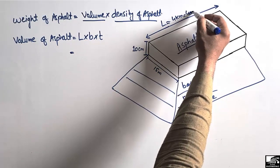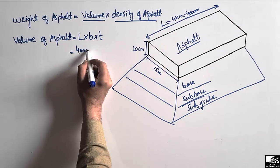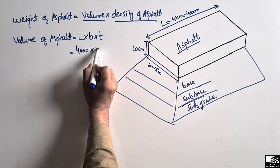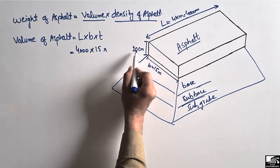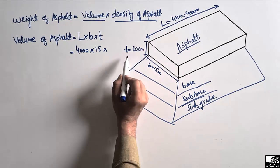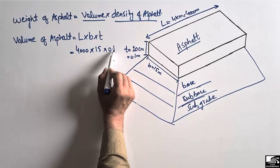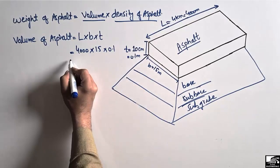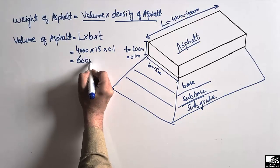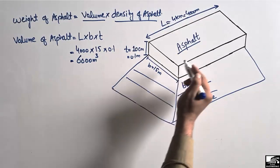So: 4000 meters (length) multiplied by 15 meters (breadth) multiplied by 10 centimeters (thickness). Converting 10 centimeters to meters gives 0.1 meters. Multiplying these three values together, we get 6000 cubic meters. This is the volume of asphalt used in this flexible pavement.